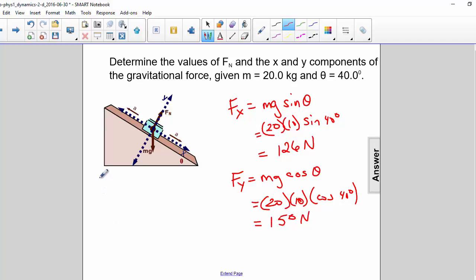Now the normal force. So we can see on our free body diagram that if we break mg into components, the normal force has to be equal to Fy. That's because normal force minus Fy equals zero. So the normal force is equal to Fy, which is equal to 150 newtons.